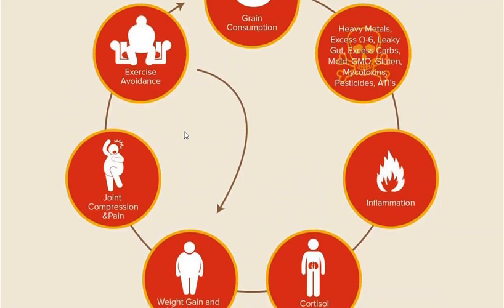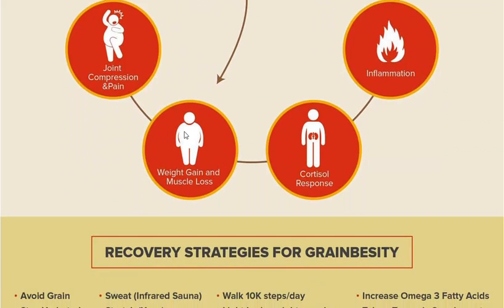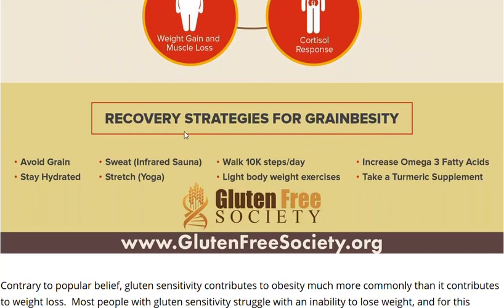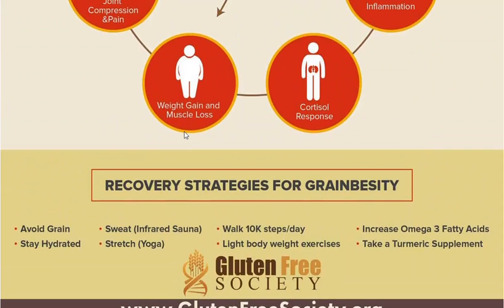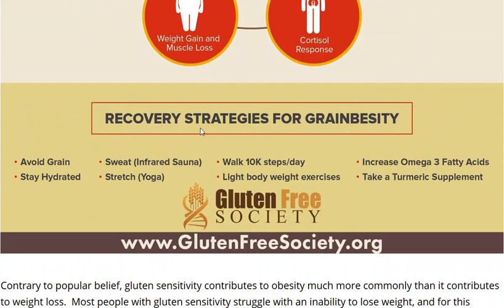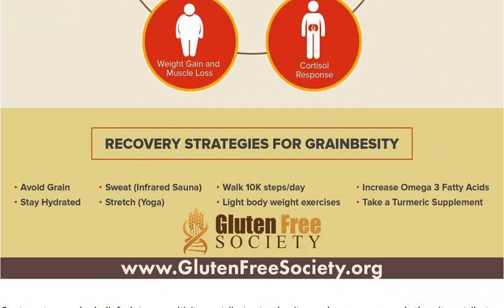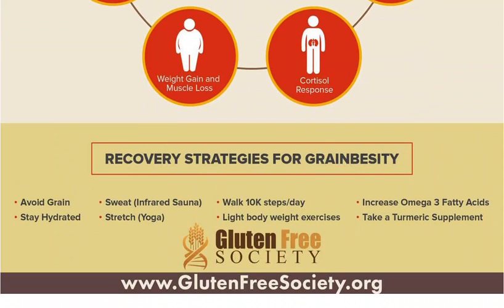That's why it's called the grain-obesity cycle. Now let's talk strategy — what you can do to recover from this type of problem. Number one: avoid grain. Obviously, we've been talking about that the whole time. I've written a book called No Grain, No Pain with all the science in it — more than 300 medical references documenting what I'm telling you in this video. Avoiding grain is the first step.